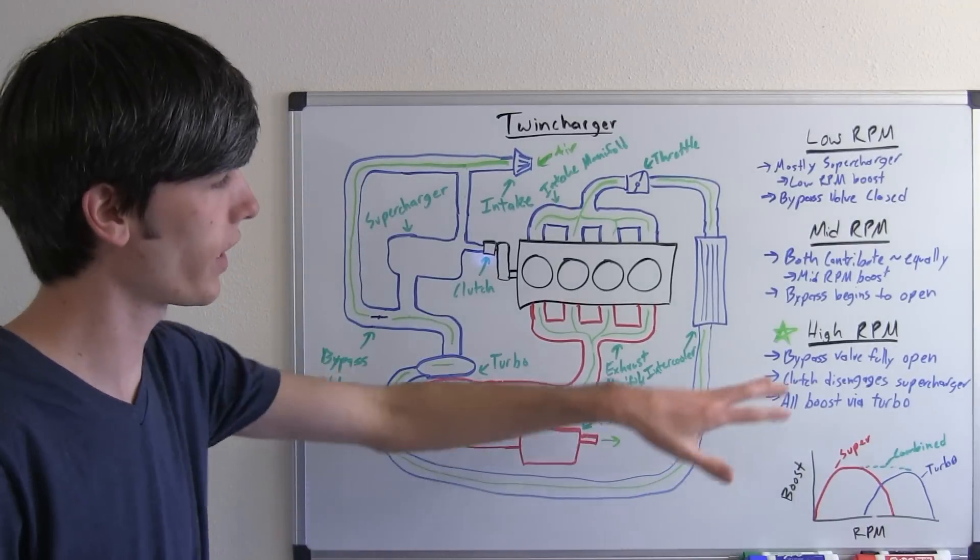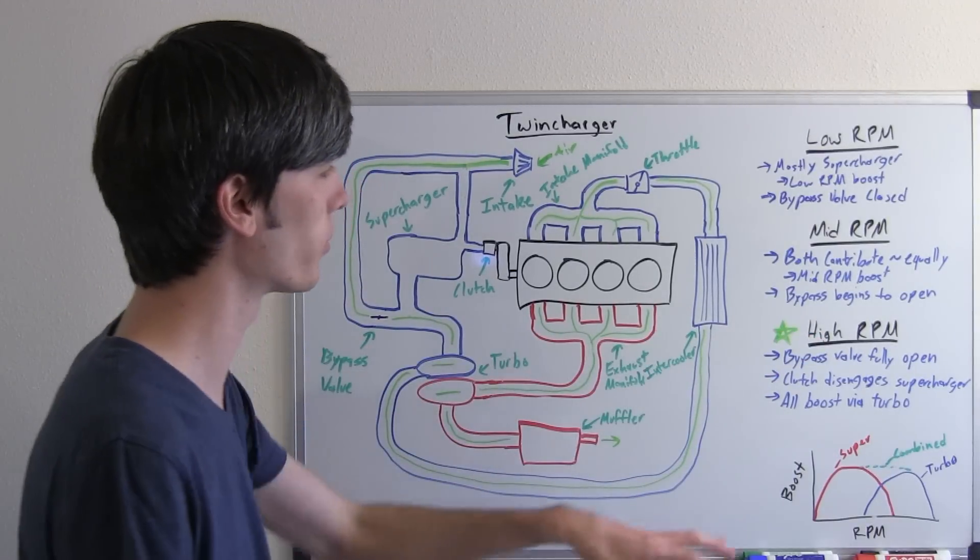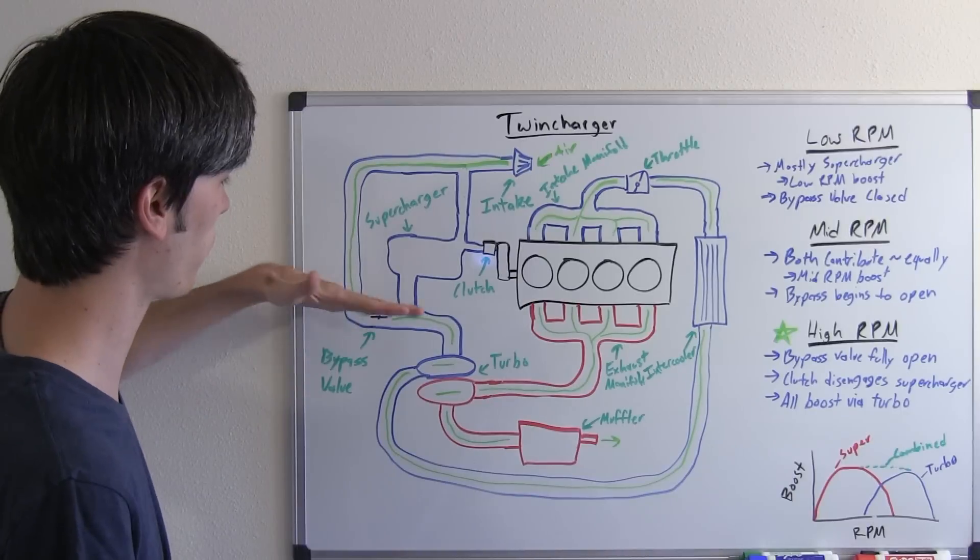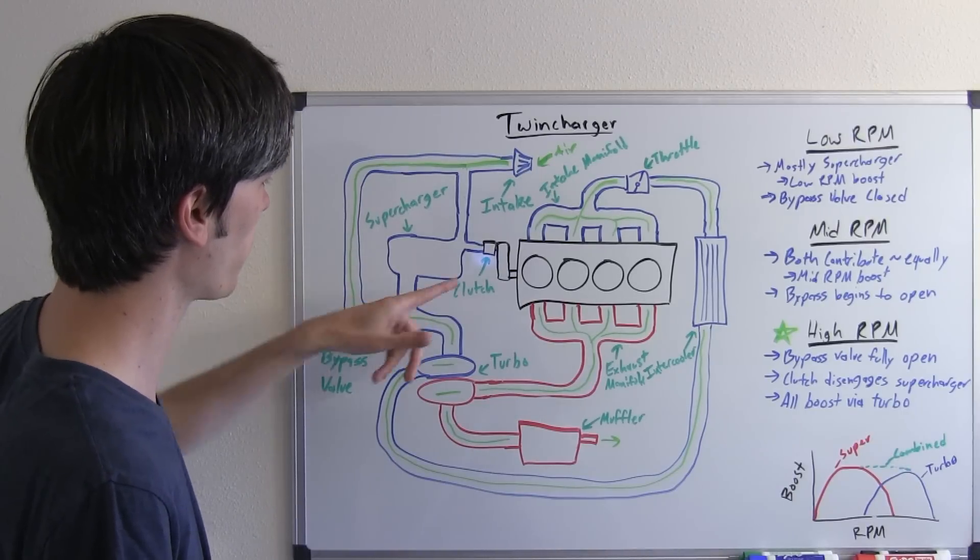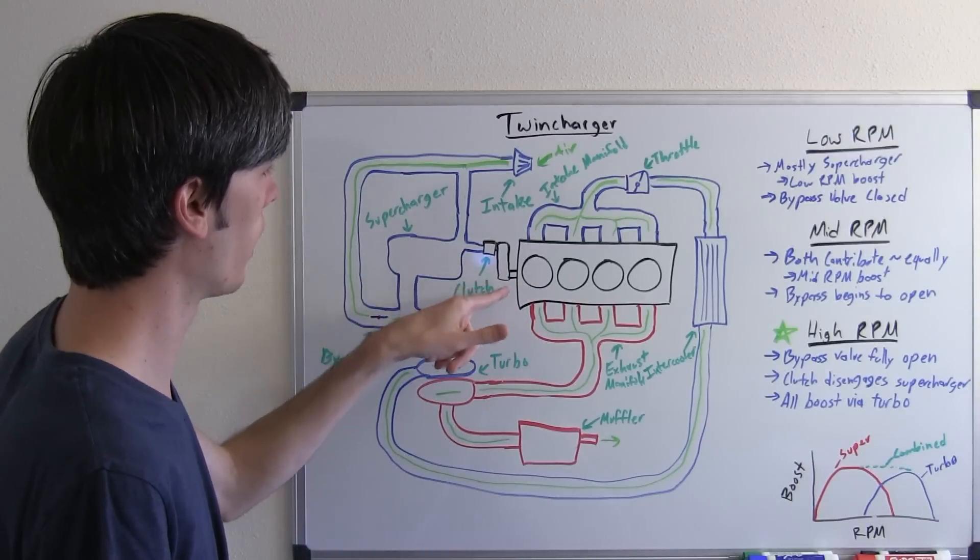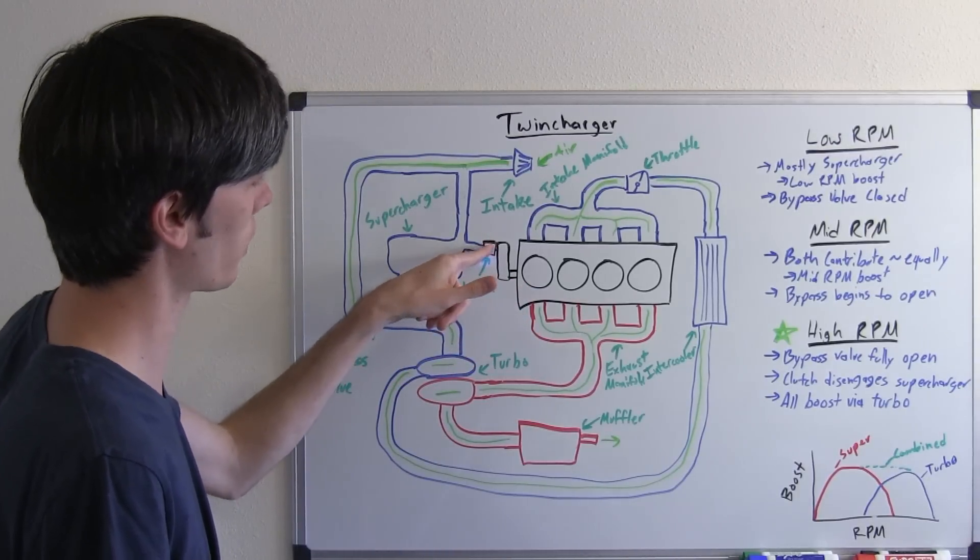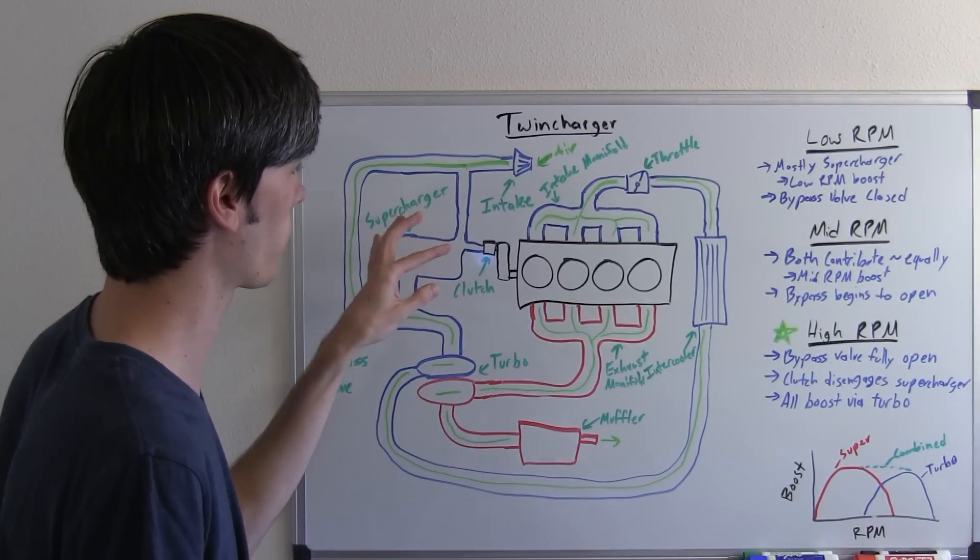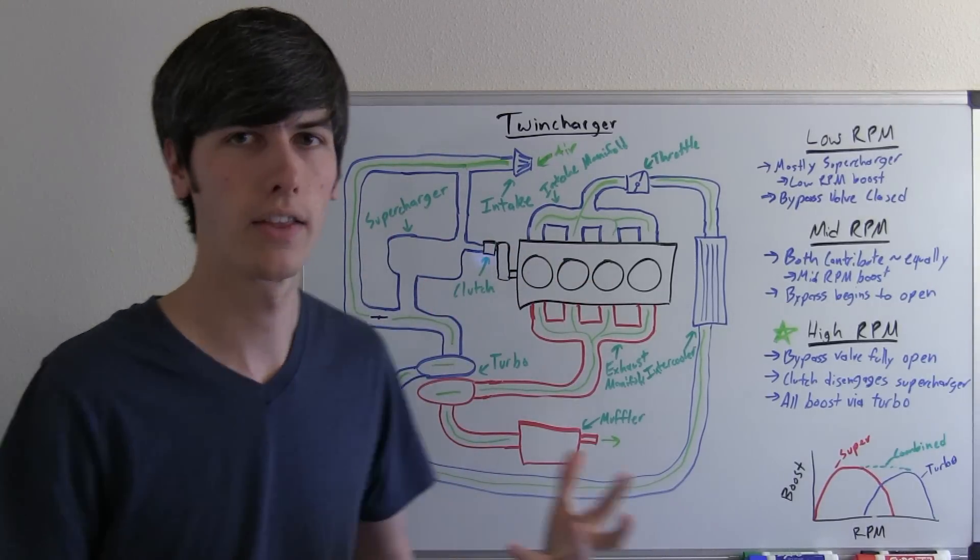Okay, so now let's look at the final stage where we get into our higher RPMs. Once we get into our really high RPMs, that bypass valve is going to be fully open, and once that's fully open, this clutch here is going to disconnect the supercharger from the engine. This is basically going to be an electromagnetic clutch here that'll just deactivate, and then your supercharger is no longer being spun by the engine. Thus you're saving that energy, you're not wasting energy spinning a supercharger.